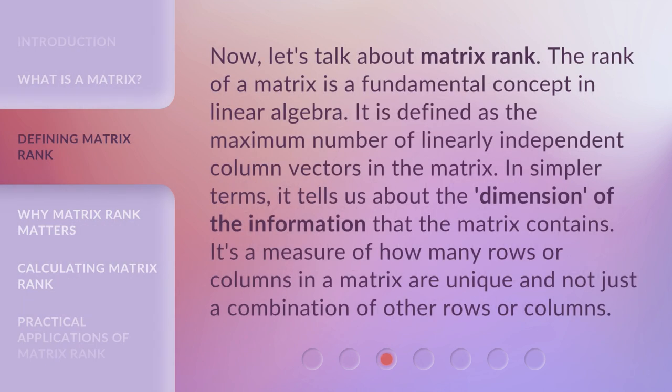Now, let's talk about matrix rank. The rank of a matrix is a fundamental concept in linear algebra. It is defined as the maximum number of linearly independent column vectors in the matrix. In simpler terms, it tells us about the dimension of the information that the matrix contains. It's a measure of how many rows or columns in a matrix are unique and not just a combination of other rows or columns.